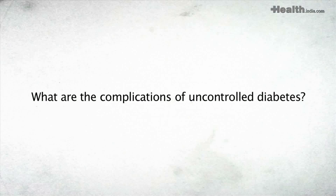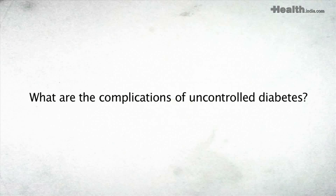What are the complications of uncontrolled diabetes? Diabetes complications are basically divided into two types: microvascular complications and macrovascular complications. The microvascular complication is related to the smaller vessels.